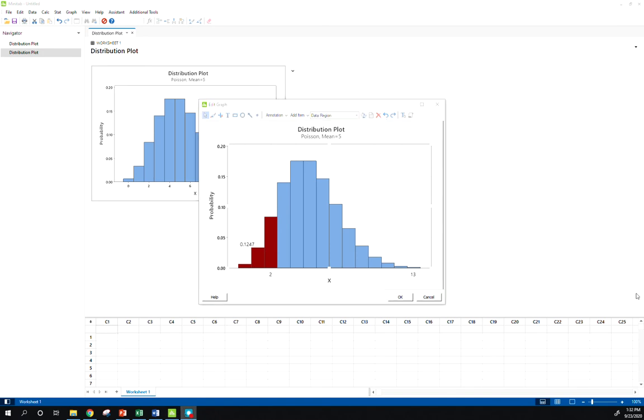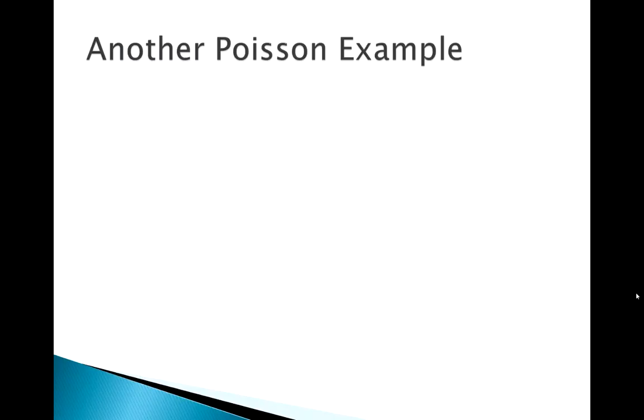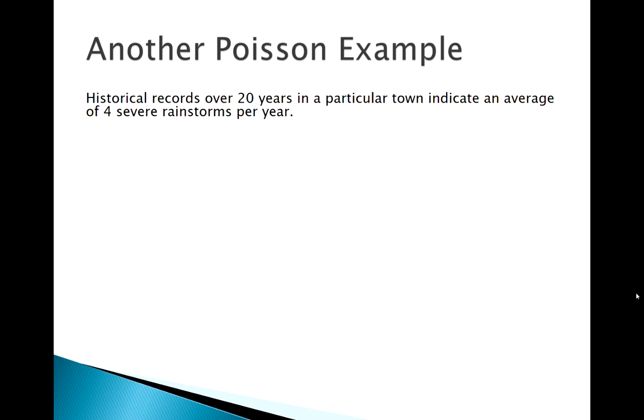We've looked at a cumulative probability, we've looked at just a standalone PMF example. Now let's look at another example. Over the last 20 years we've found an average of four severe rainstorms per year in a certain town.